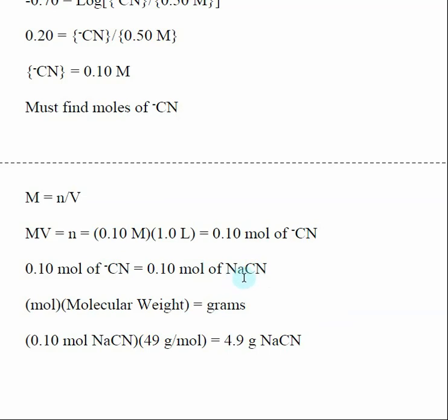And then we realize that because the CN⁻ is attached to sodium, it's going to be a soluble salt. So it will dissociate 100%. So for every one mole of sodium cyanide I add, I get one mole of CN⁻. If I need 0.1 mole of CN⁻, then I need 0.1 mole of sodium cyanide.